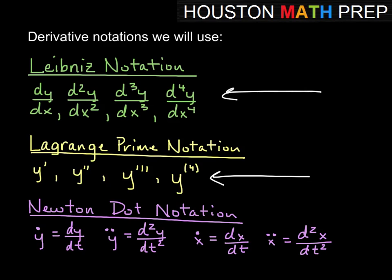The last notation we'll use a little bit less is Newton's dot notation. When we see y dot, we'll think of that as always derivative with respect to t. If we see a single dot, that means y dot is dy dt. Y double dot would be the second derivative of y with respect to t. Similarly, for x dot and x double dot, we would have the derivative with respect to t when we see the dot notation.